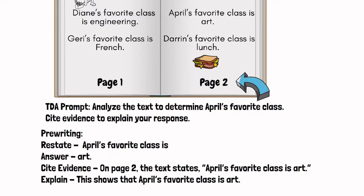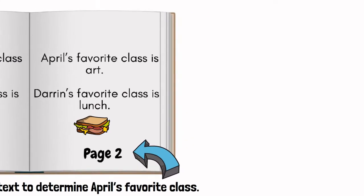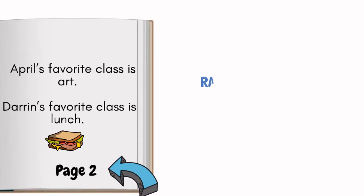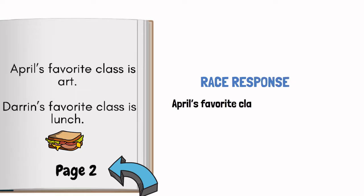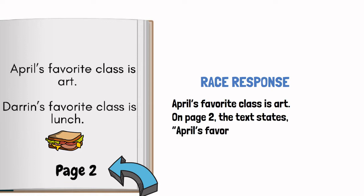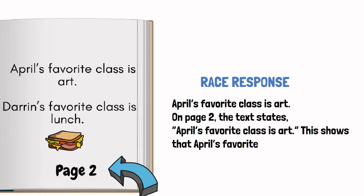I explain where I found the answer. On page two, the text states, quote, April's favorite class is art. And then I explain. Now I'll take my pre-writing and turn it into a high-quality short RACE response: April's favorite class is art. On page two, the text states, quote, April's favorite class is art. This shows that April's favorite class is art. Well, that was certainly easy.